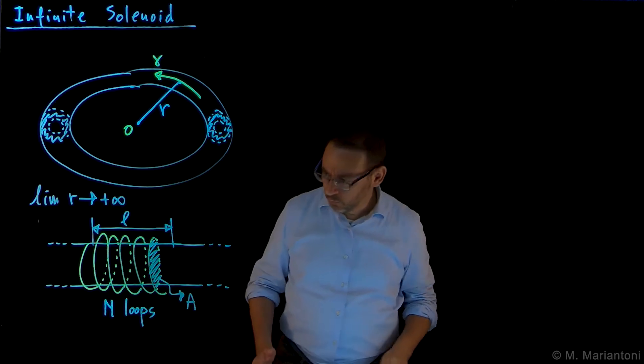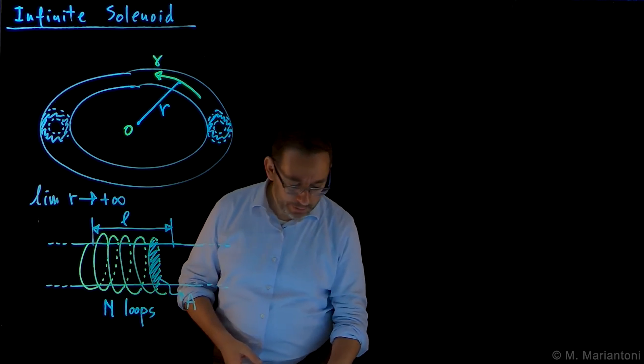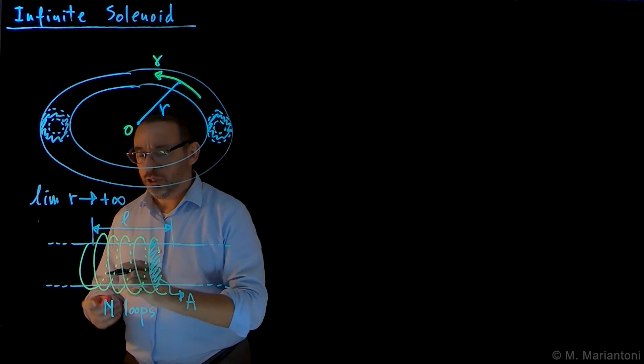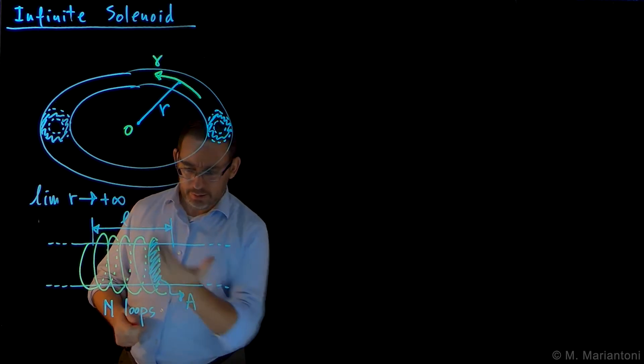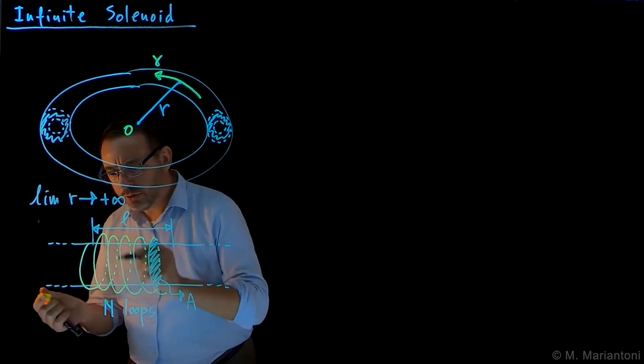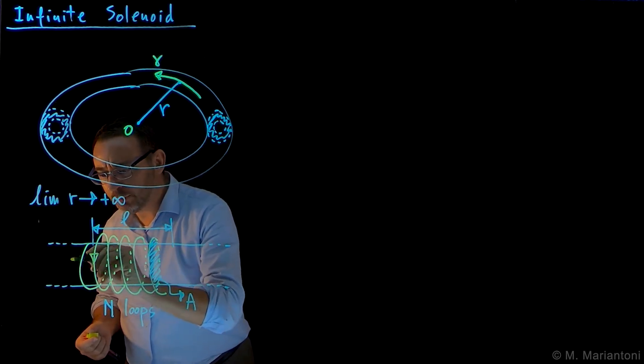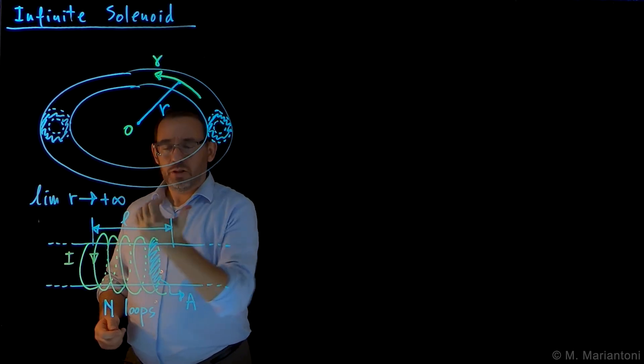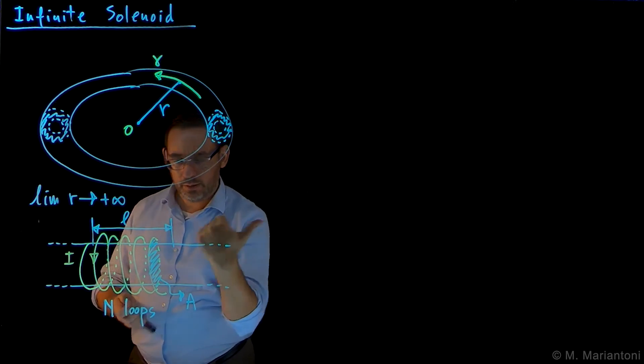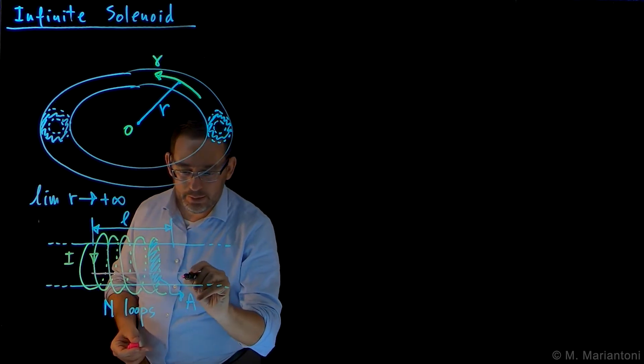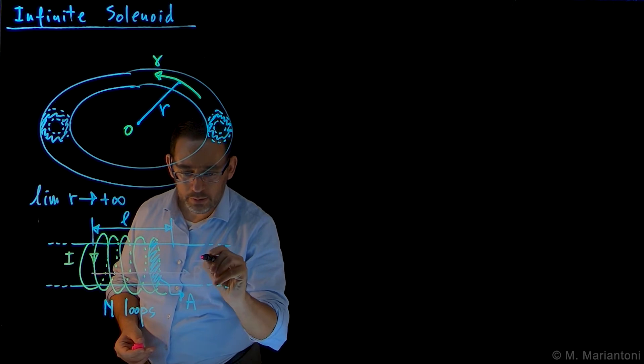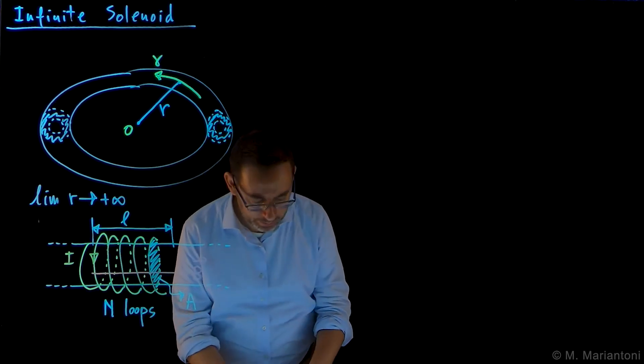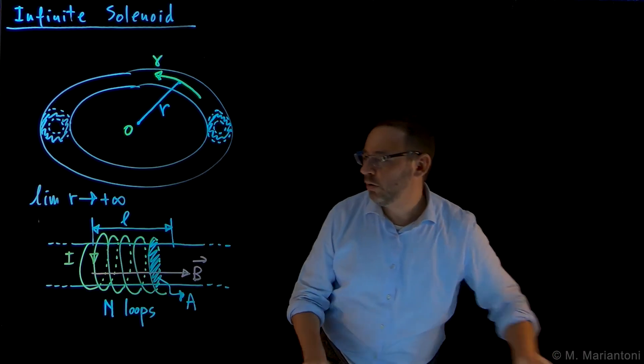So then now that we know that, we expect that the magnetostatic field will go in this direction. Suppose that the current goes in this direction, this is my current I. So right-hand rule is the same as here, so if the current goes like this, the magnetic field we expect will be in this direction here. This would be our expected B.